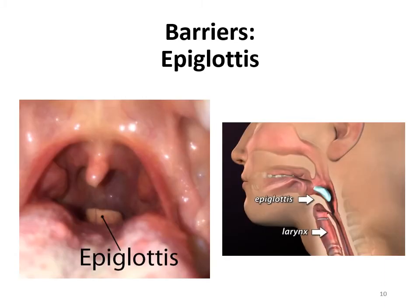Next up is the epiglottis, another barrier of your innate immunity. This is basically a flap at the back of your throat that protects your respiratory tract — it tries to stay closed to prevent microbes from entering. This epiglottis is why you should never talk while you're eating, because the vibrations of your larynx will open that flap, and food will go into your respiratory tract — causing coughing or even choking, since nothing except air is supposed to enter your respiratory tract.